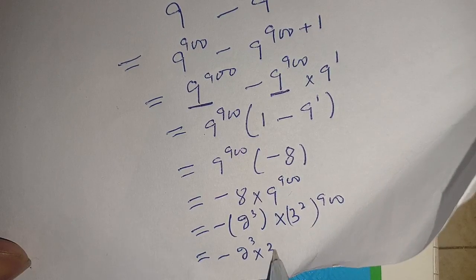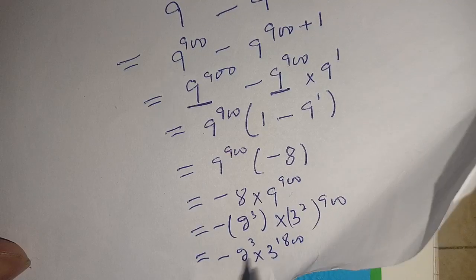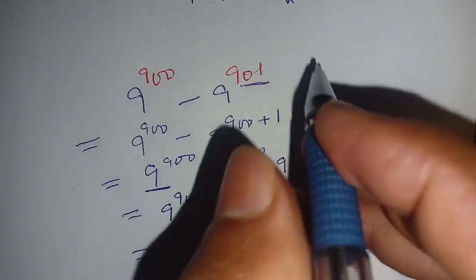Thus 9^900 - 9^901 equals -2^3 × 3^1800.